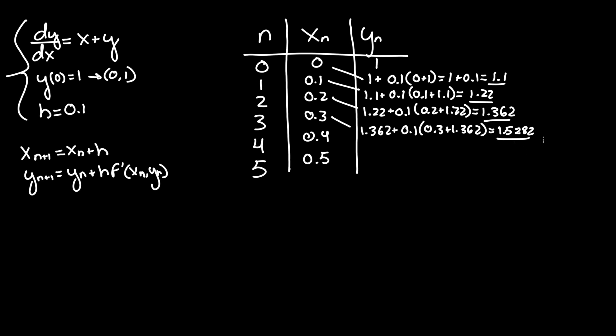Try going to about three or four decimals. So y_5 = y_4 + h·(x_4 + y_4) = 1.5282 + 0.1(0.4 + 1.5282) = 1.7210. This gives you the final y value at x = 0.5.